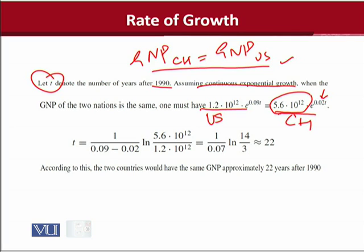Now on the other hand side, we have U.S. And this is the initial GNP of U.S. And this is the growth rate of U.S. GNP. And the value of t is to be found.